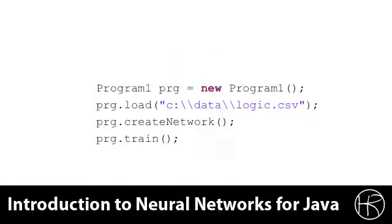The main method starts out easy enough. We instantiate a new instance of program 1. Then I call a load method that will actually load the CSV file. This loads the CSV file and creates the training data. Then I call create network which is going to create the neural network. And then I call train which is going to actually train the neural network. Now there's many ways to construct this program. This is just the way that I decided to logically break it down.